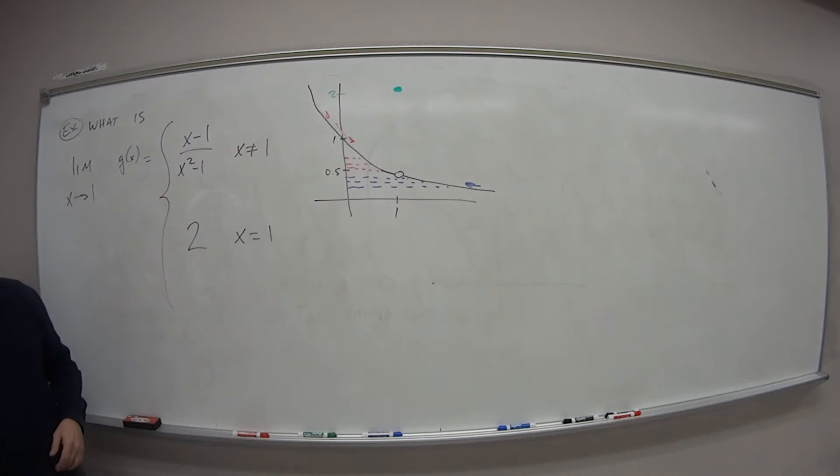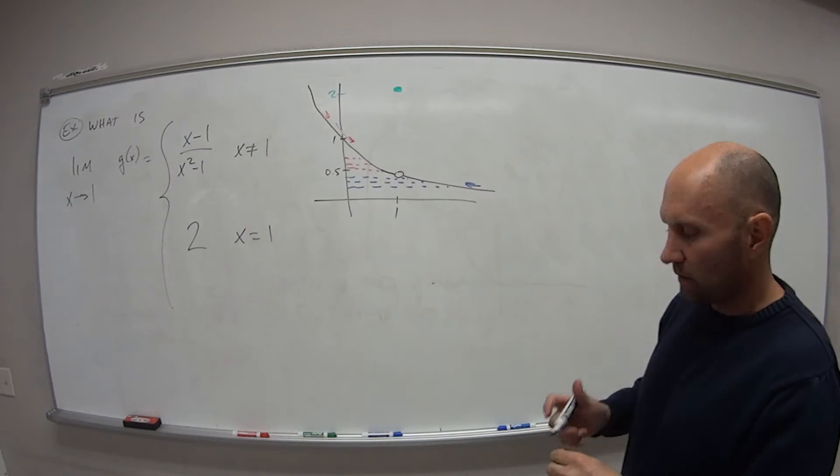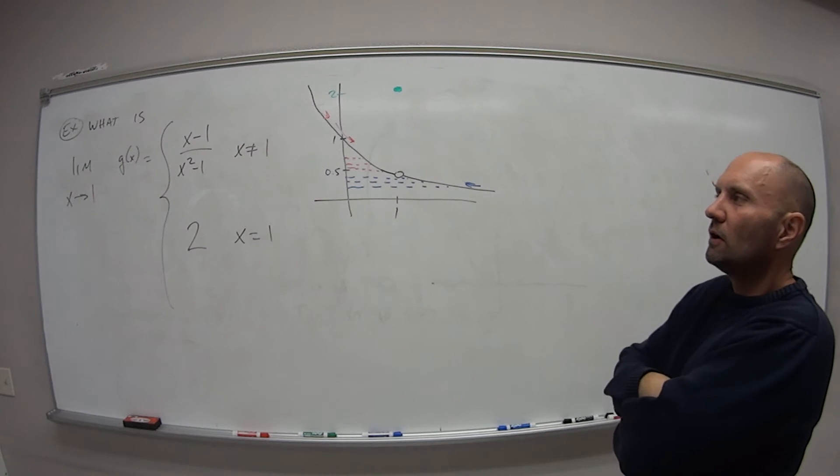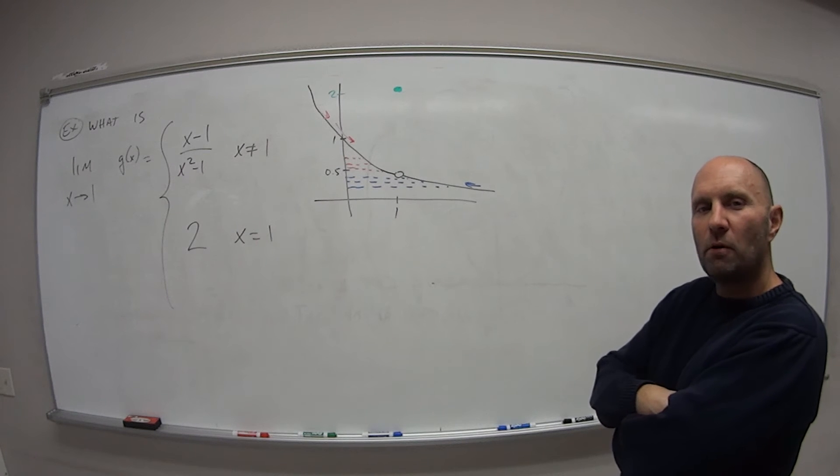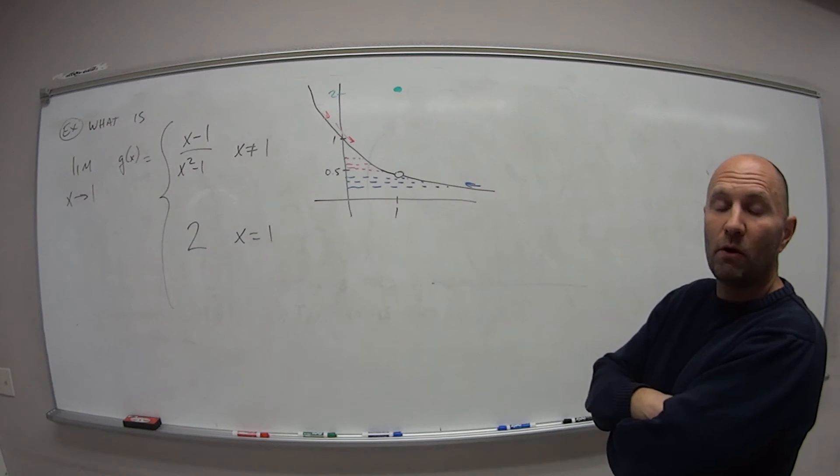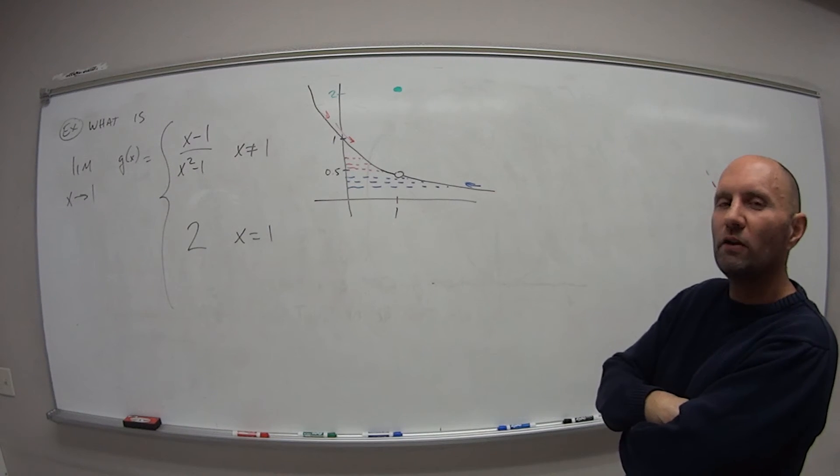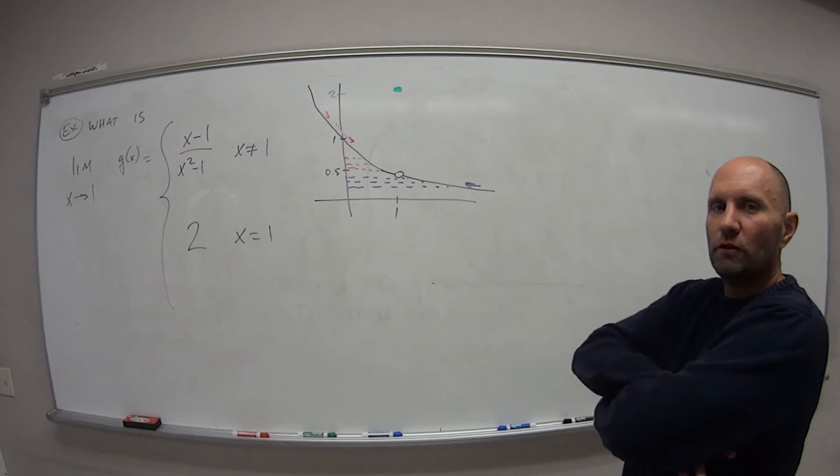So now, what is our answer here? What is the limit as x approaches 1 of this function g of x? So I'm going to pause here for a minute. If you want to hit pause on the video yourself and kind of give it some thought, what is our answer as x approaches 1 for this function?